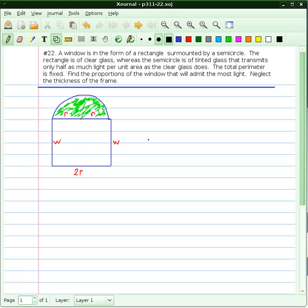I've also labeled some variables. First thing they tell us is that the perimeter is fixed, so let's get an expression for the perimeter. The perimeter of the semicircle would be half of 2πr, which would be just πr, and then continuing around the window we have two w's and two other r's, so that would be plus 2r plus 2w.